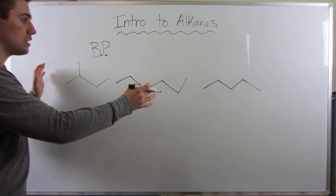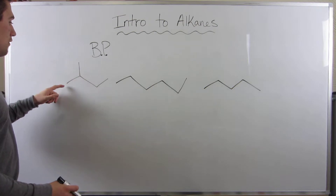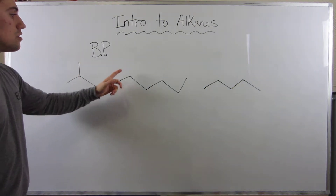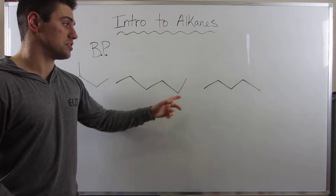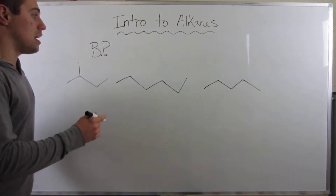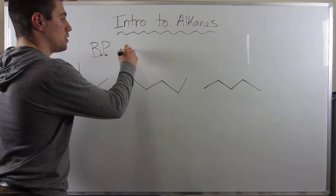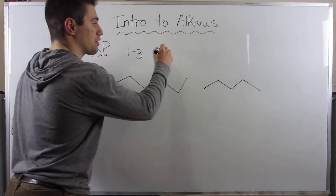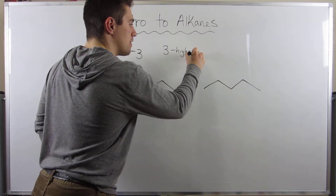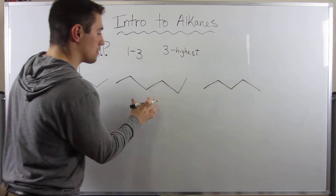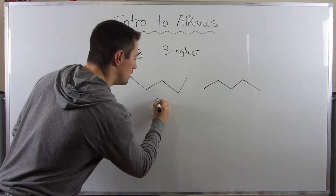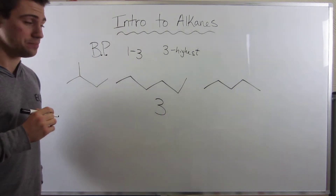So if we look at the structures I've drawn here, we have a 5-carbon chain, a 6-carbon chain, and another 5-carbon chain. Clearly, if we're going to rank these between 1 and 3 and give 3 the highest, that means this 6-carbon chain — that would be hexane — gets the highest boiling point.